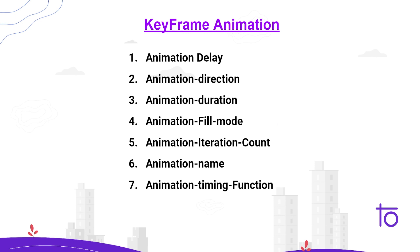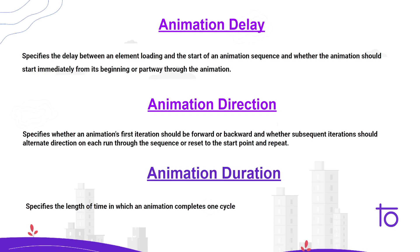In keyframe animation, we have these properties: animation-delay, animation-direction, animation-duration, animation-fill-mode, animation-iteration-count, animation-name, and animation-timing-function. Don't worry — I will show you all these properties in detail with live examples. Let's go line by line. Delay means if we want to perform some animation with a delay of some seconds, we can use this property.